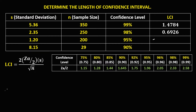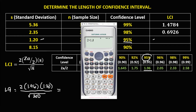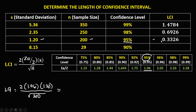For this given: LCI equals 2 times the confidence coefficient. Since the confidence level is 95%, the confidence coefficient is 1.96. Times the standard deviation, that's 1.20, over the square root of the sample size — square root of 200. Solving: 2 times 1.96 times 1.20, then divide by the square root of 200. The length of the confidence interval is 0.3326.